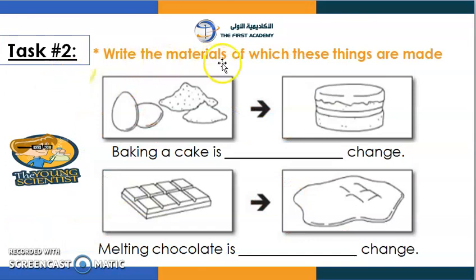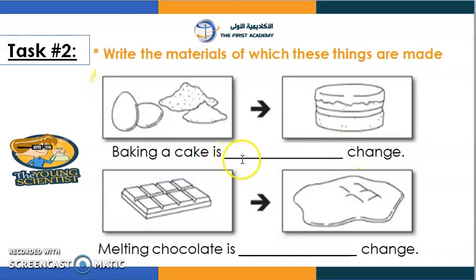Our second task is to identify the type of change. Baking a cake — what type of change is it? You're right, it's irreversible, because you can't unmix the ingredients.